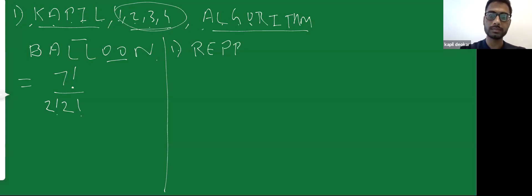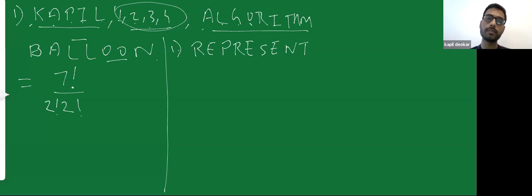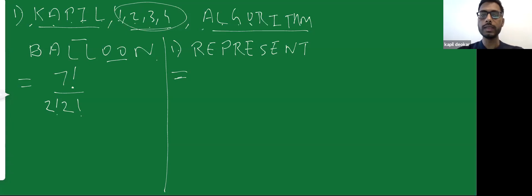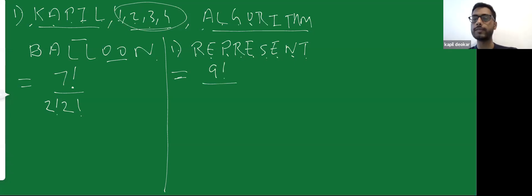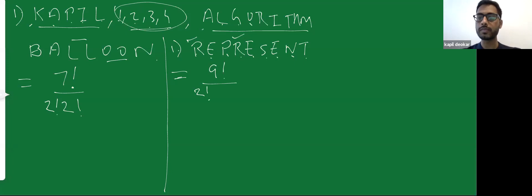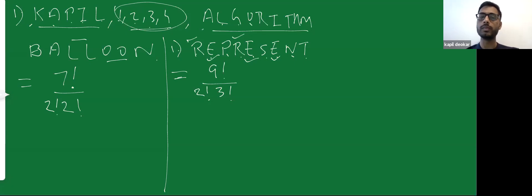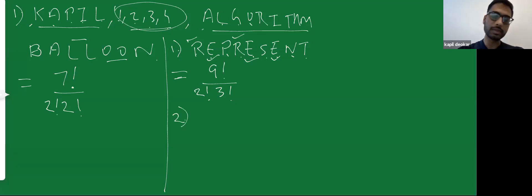Next, in how many ways can we arrange the letters of the word 'represent'? There are 9 letters, so it can be arranged in 9 factorial ways. However, R is repeated twice, so we divide by 2 factorial. E is also repeated three times, so we divide by 3 factorial. Therefore, the answer is 9! divided by 2! × 3!.